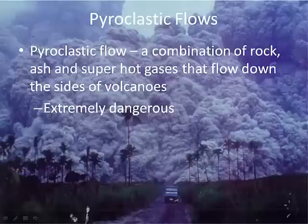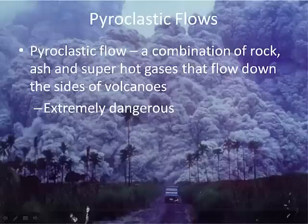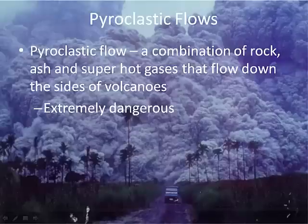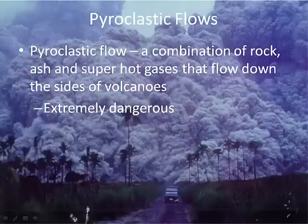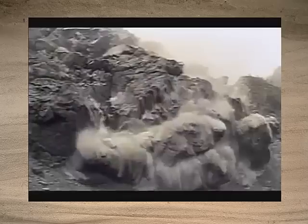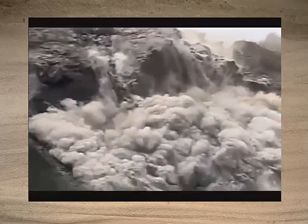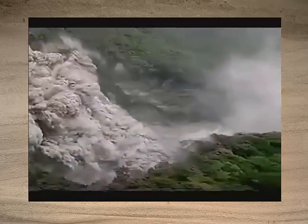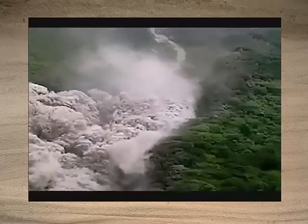One of the most dangerous things that can happen with a volcanic eruption is a pyroclastic flow — a mixture of superheated gases and volcanic ash. The gases can be anywhere from 1,000 to 1,500 degrees, and they flow down the sides of volcanoes as a very dense, heavy cloud. Pyroclastic flows are what killed all the people in Pompeii and entombed them in ash. In the video, something triggers a pyroclastic flow about ten times bigger than all that came before, and within moments it overwhelms the valley.